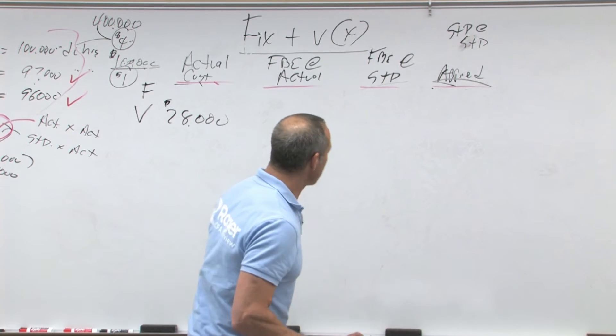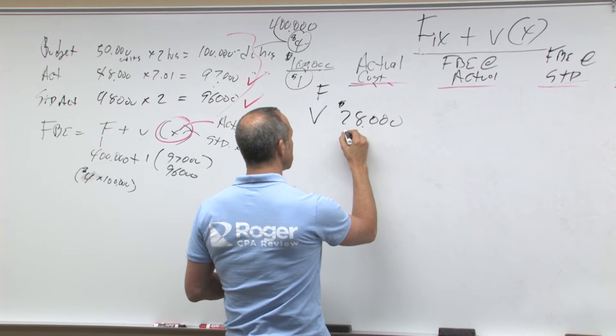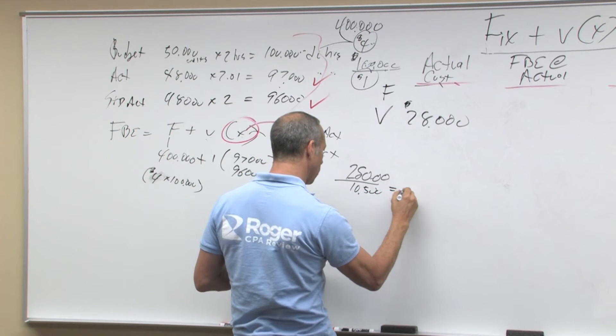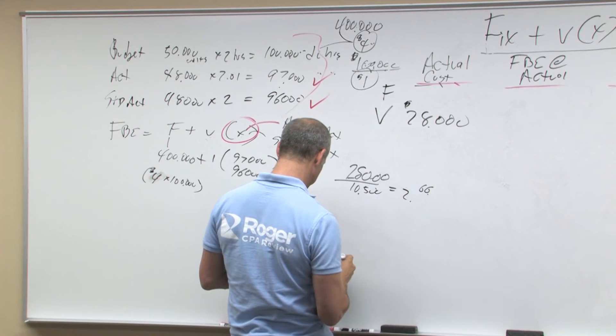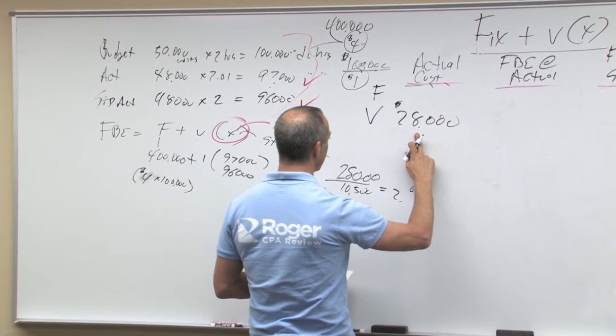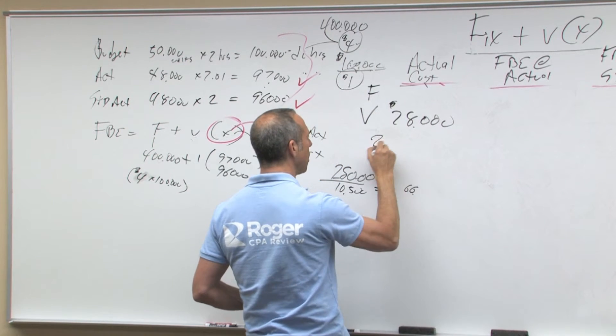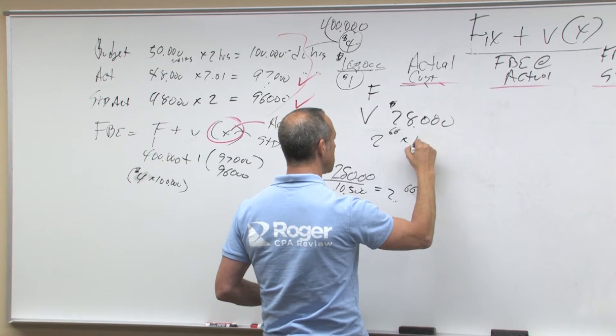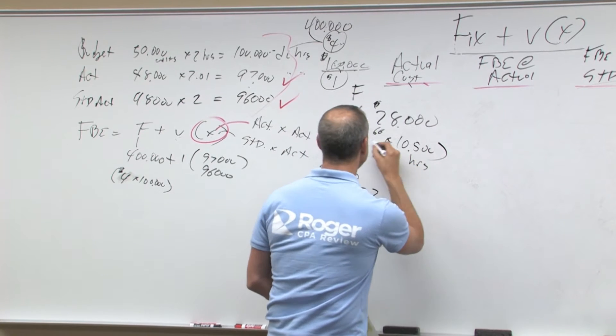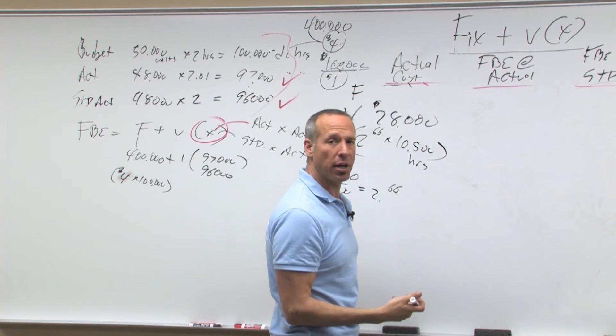So therefore, if I wanted to break it out, 28,000, which is 28,000 divided by 10,500 equals $2.66. So to calculate the 28,000, it's really 10,500 actual, or let's do it the other way since we did the cost. $2.66 times actual, which is 10,500. So it's 10,500 hours at $2.66 per hour. I didn't have to do this, but I'm going to show you why, because it's easier to compare a little bit later.